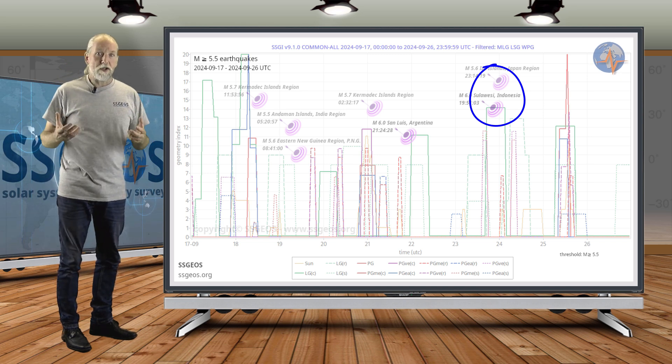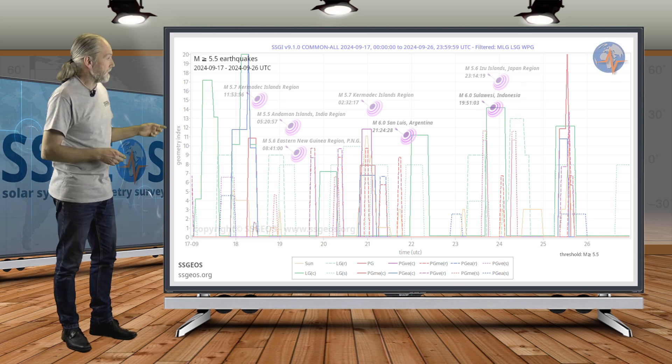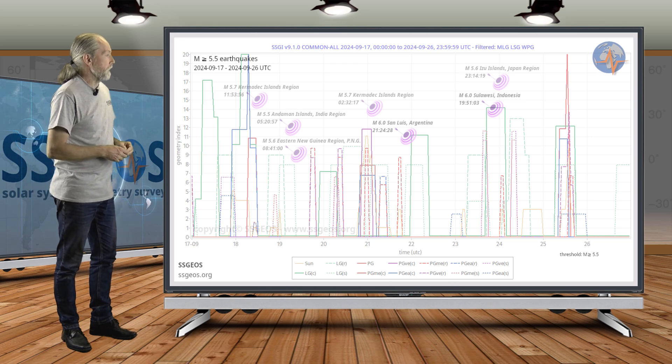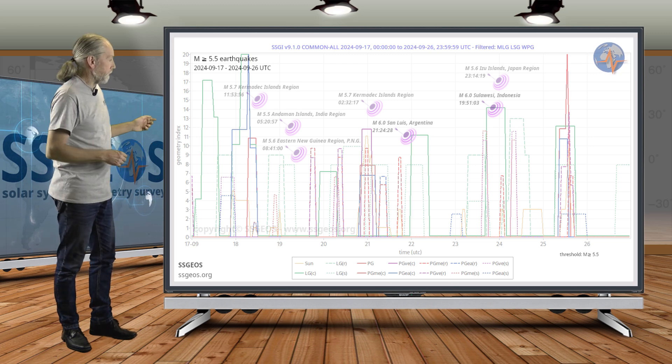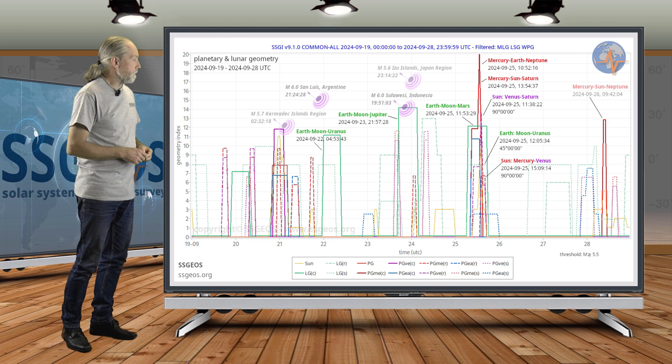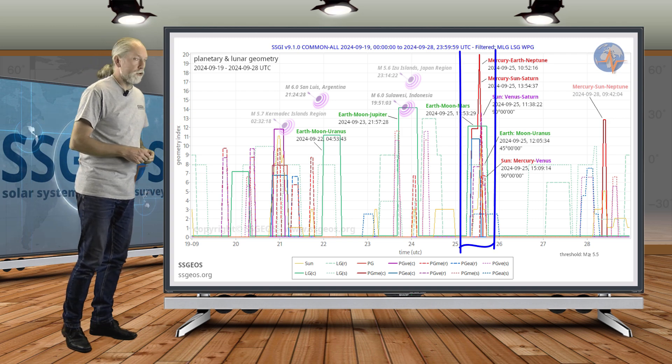Here it gets interesting. If you look at the next SHI graph from the 19th to the 28th, we see this colorful peak on the 25th that I briefly discussed in the previous update. We see a high red peak because Mercury is involved in two planetary conjunctions.